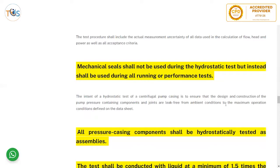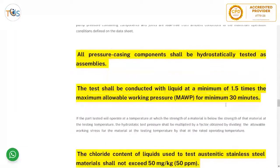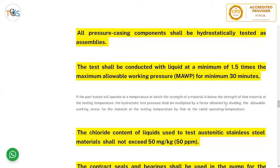The intent of the hydrostatic test of a centrifugal pump is to ensure the design and construction of pressure-containing components and joints are leak-free from ambient condition to the maximum operating condition defined on the data sheet. All pressure casing components shall be hydrostatically tested as assemblies. The test shall be conducted with liquid at a minimum of 1.5 times the maximum allowable working pressure held for 30 minutes.